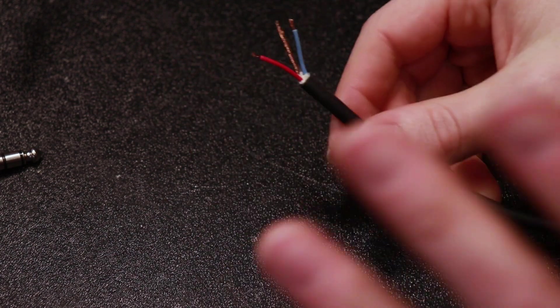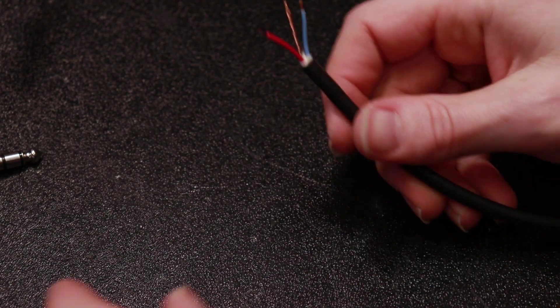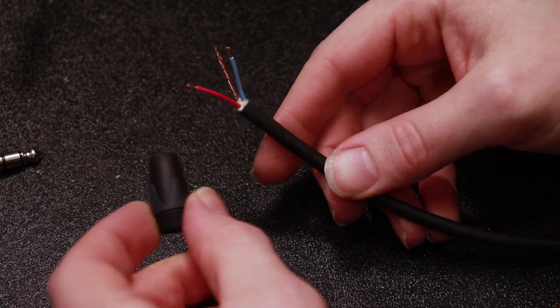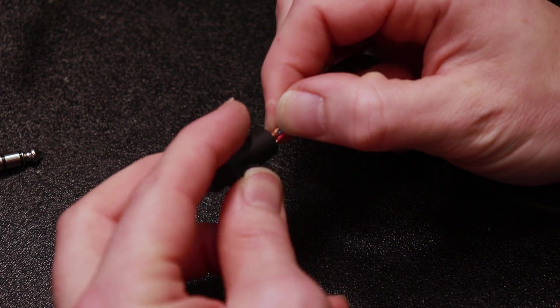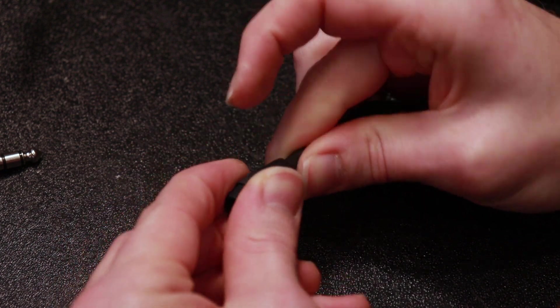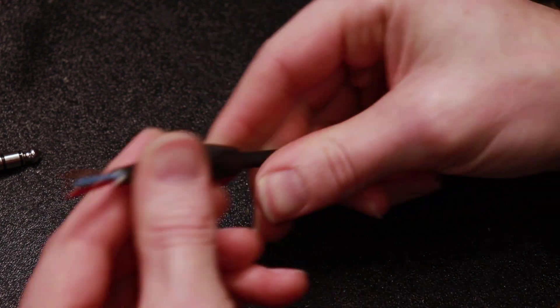Now we want to make sure before we go anywhere and start soldering anything that we go ahead and put anything like this, like I said, on there. So we're going to put this sleeve on there that needs to be the end because once we start soldering stuff up, we won't be able to push this on.